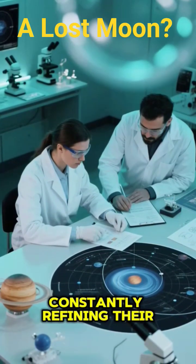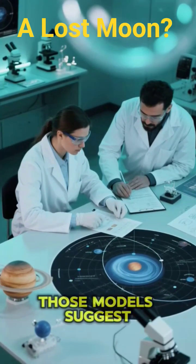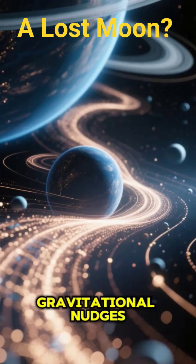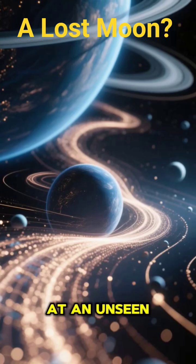Planetary scientists are constantly refining their models of the outer solar system, and sometimes those models suggest irregularities. Gravitational nudges, unexpected orbital patterns, subtle clues that hint at an unseen player.